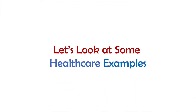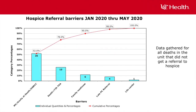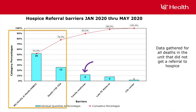Let's look at some real-world examples of Pareto charts used in projects here at UCHealth. Here is a Pareto chart describing barriers to hospice referrals from January 2020 through May 2020. Data was gathered for all deaths in the unit that did not get a referral to hospice. It was suspected early in the project that one of the bigger barriers was that the patient's family was not ready. Using the Pareto chart, we can see that family readiness is not the biggest barrier — this was a surprising and valuable learning for the team.